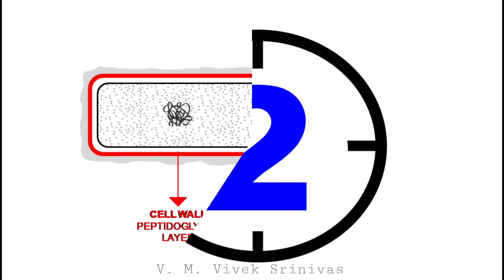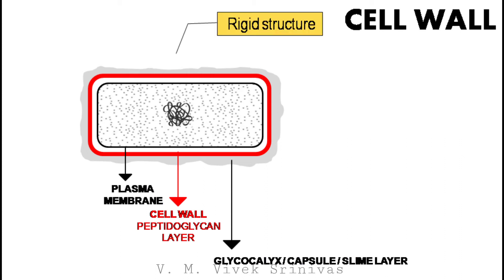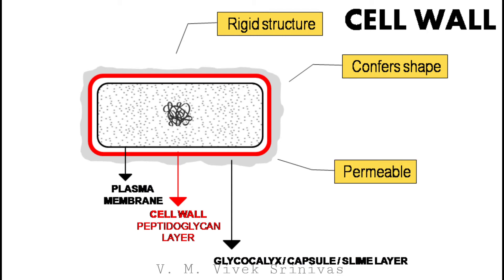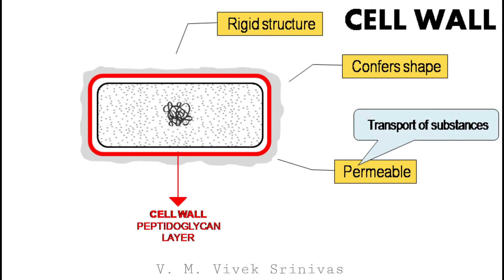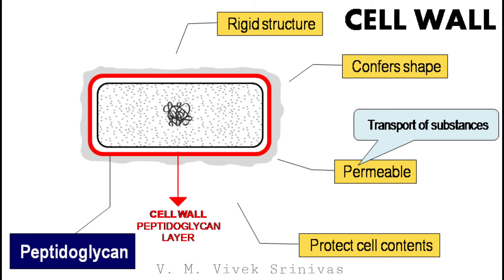The next structure is the cell wall. This structure is positioned between the capsule and the plasma membrane. The cell wall is a rigid structure which confers shape to the bacterium. It is permeable and is responsible for the transport of substances either by simple diffusion or by complex transport systems. The important function of the cell wall is to protect the contents of the cell from adverse conditions and to prevent the bacteria from rupturing when there is variation in osmotic conditions. Chemically, the major component that makes the cell wall is peptidoglycan.